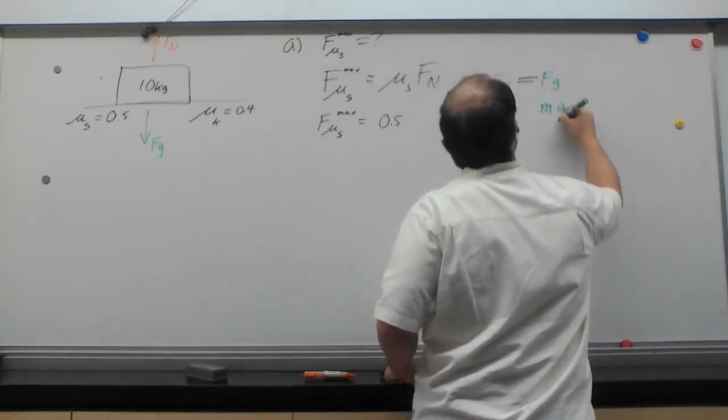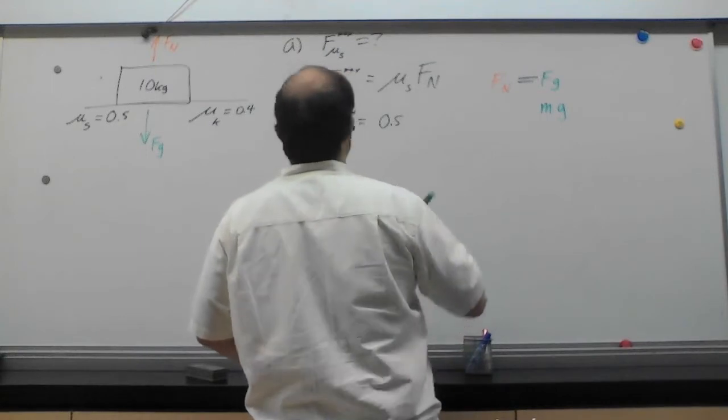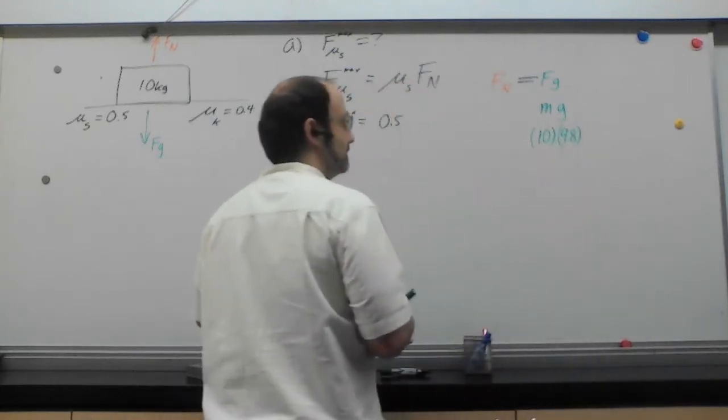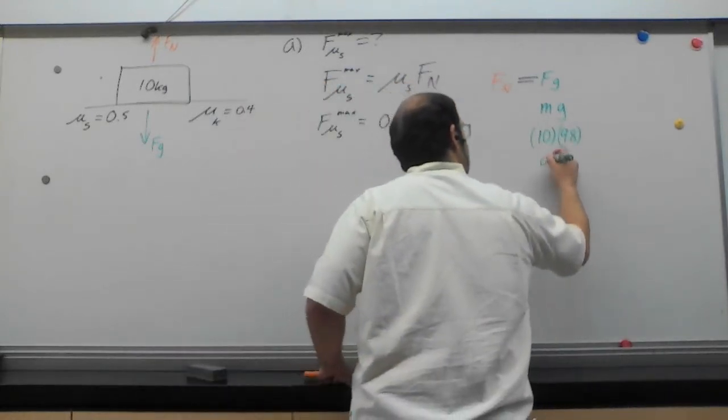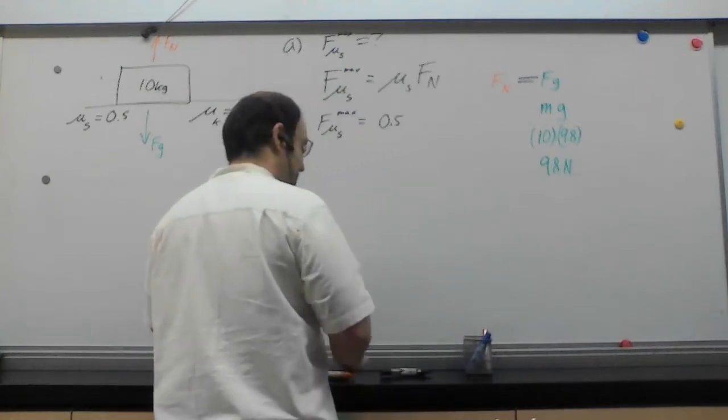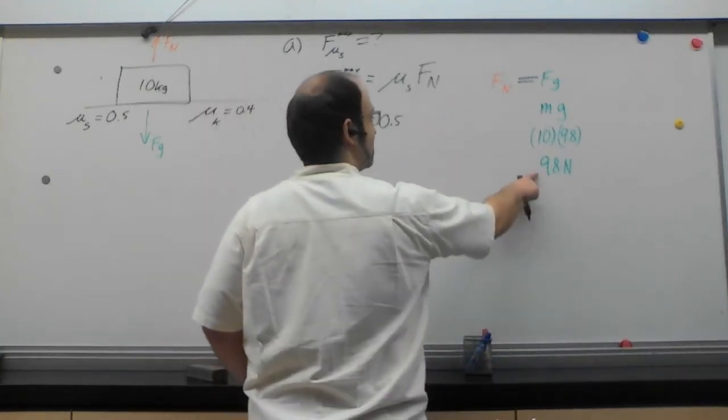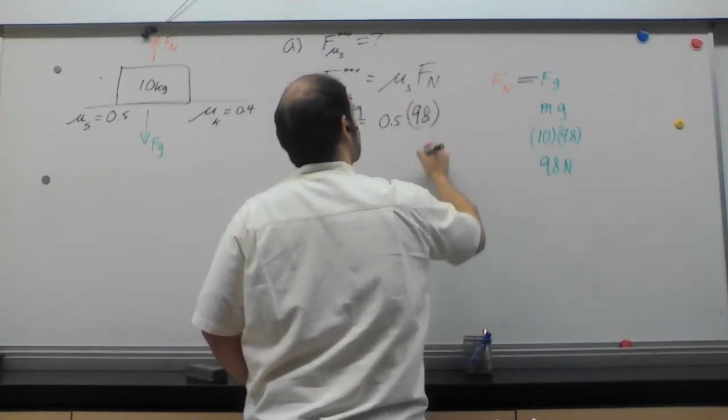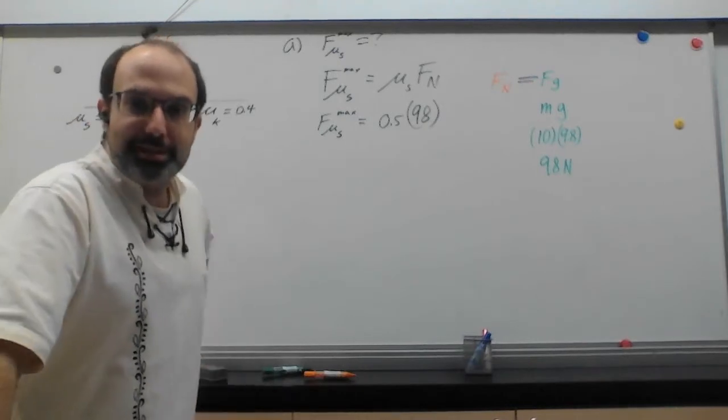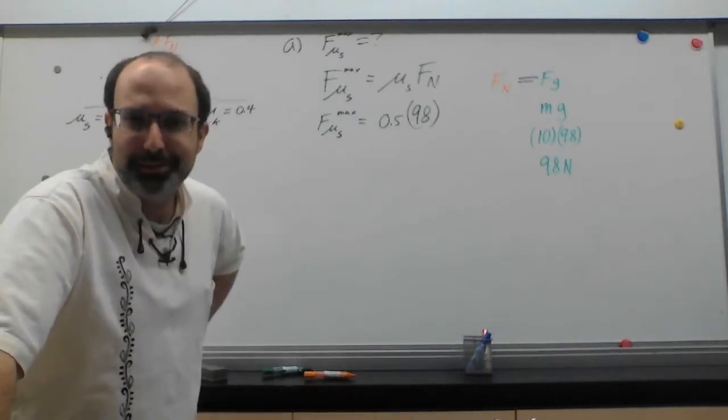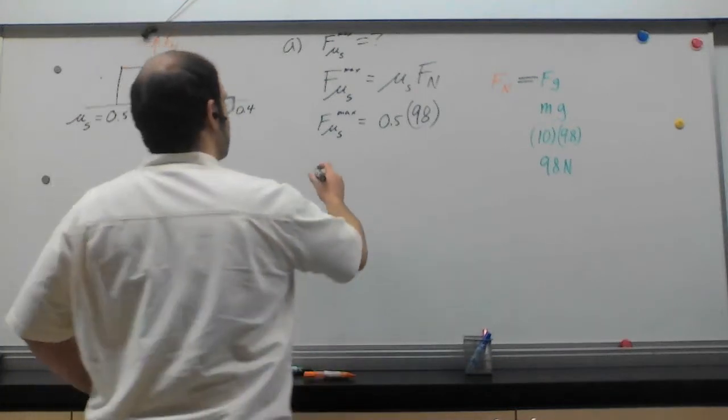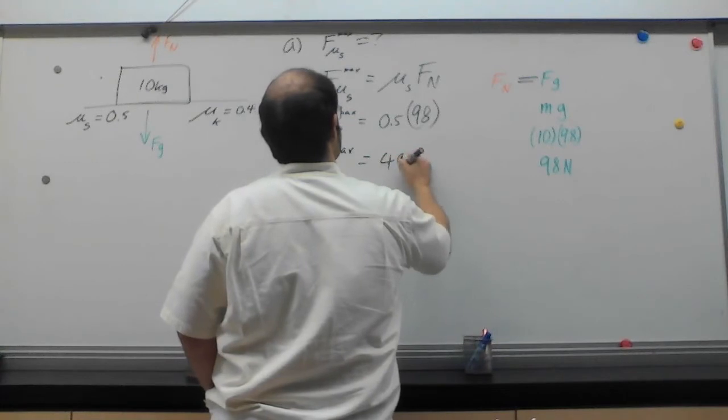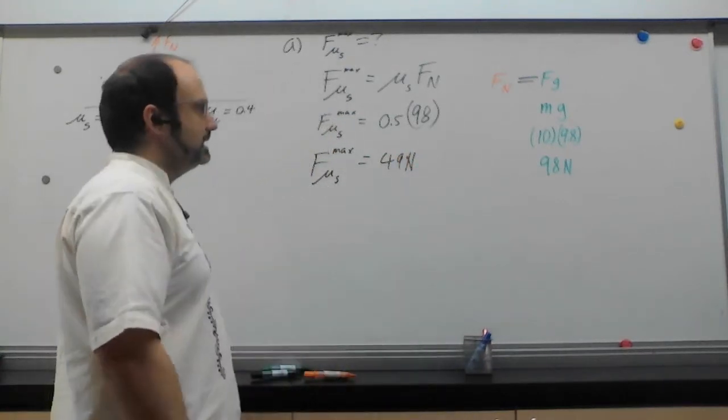So we just need to be able to find what F_g is, and then we'll know what F_n is, which means we can solve the rest of our question. So F_g is going to be equal to mass times gravitational acceleration. We know the mass is going to be 10 kilograms. We know the gravity is going to be 9.8. So we're going to get a nice 98 newtons, which is the same as our force normal. So I get to take that 98, plug it in right here. So all we have to do to find the static limit is take our 98 and we'll have to half it. Once we do that, we're going to get that the static limit is going to be 49 newtons.